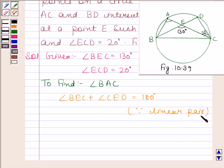Now substitute the value of angle BEC in this equation. So we have 130 degrees plus angle CED is equal to 180 degrees. This implies angle CED is equal to 50 degrees.